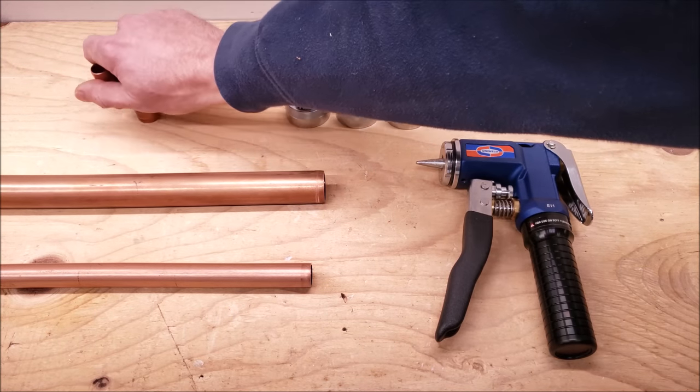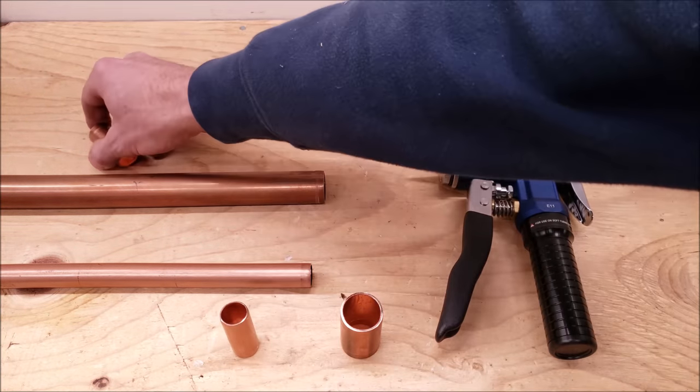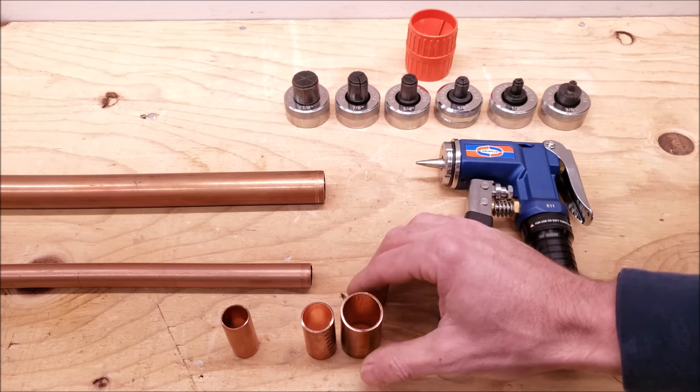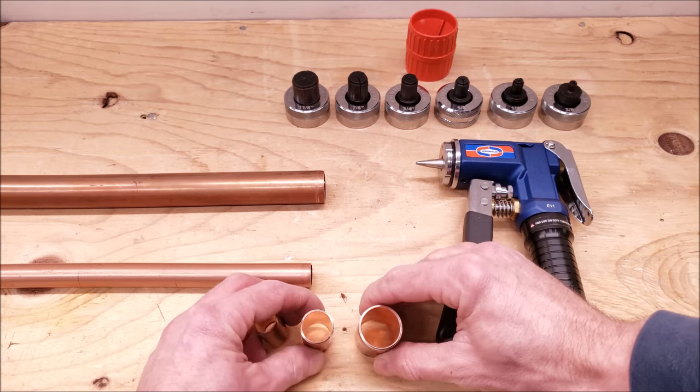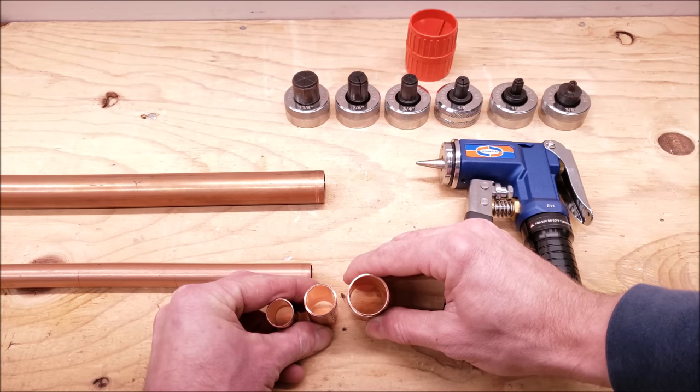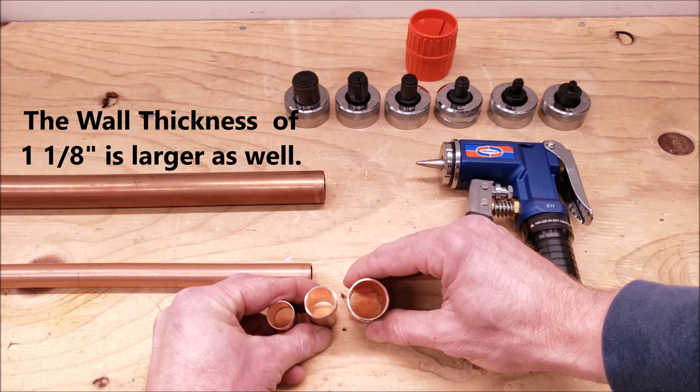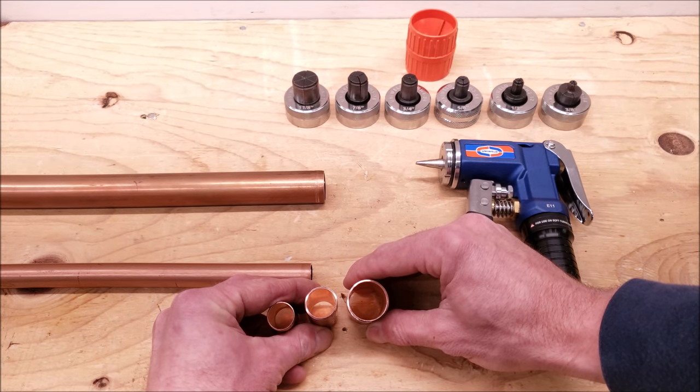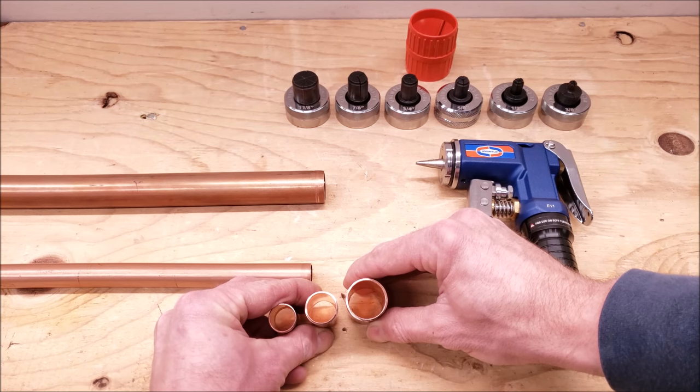And I have some different sizes of copper tubings right here, because I want you to be able to see the difference in the inside diameter. Inch and eighth is quite large of an inside diameter. So I'm going to show you how to swedge three-quarter pipe, and then I'm going to show you how to swedge inch and eighth copper pipe.